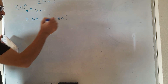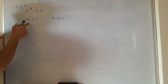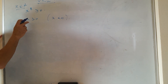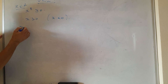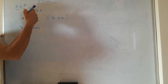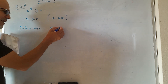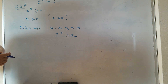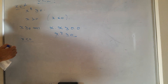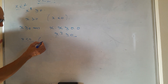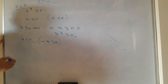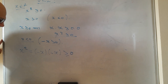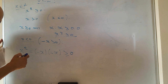In the first case, x ≥ 0, we use the previous rule to show x · x ≥ 0 · 0, so x² ≥ 0. In the second case, x < 0, we know that -x is greater than zero, and x² equals (-x)(-x), which is also greater than or equal to zero.